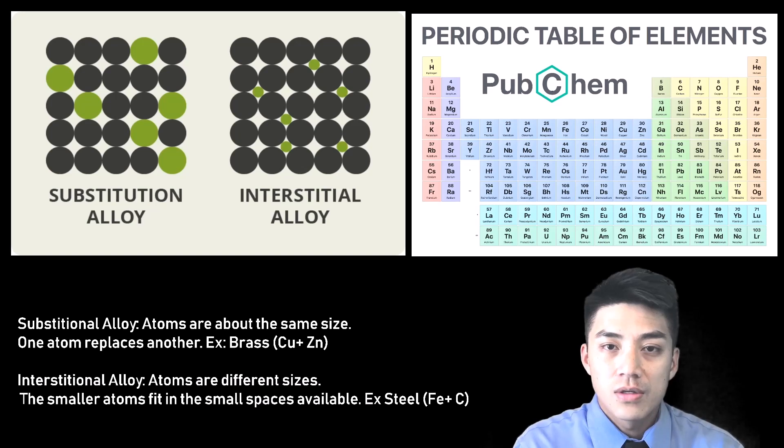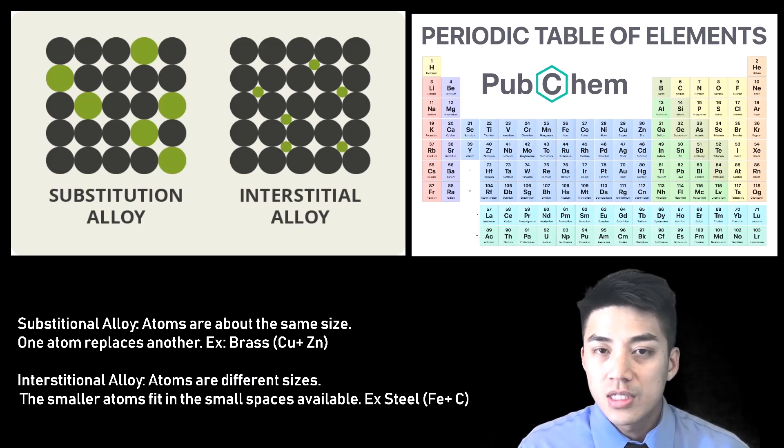There are two types of alloys, substitutional and interstitial. A substitutional alloy means the atoms are just about the same sizes, and one atom replaces the other. An example would be brass, where you have copper and zinc. These two elements are found close to each other on the periodic table.